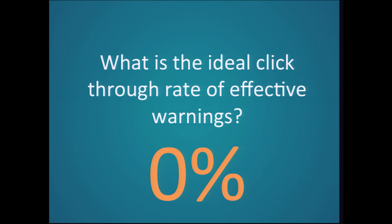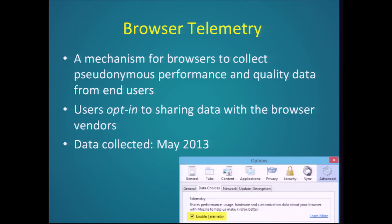What is the ideal click-through rate we want to achieve? A 100% click-through rate makes me sad, so a 0% click-through rate would make me happy. Ideally I'd want to live in a world where click-through rate for warnings is 0%. We measured this using browser telemetry — last year in May 2013, if you were using Chrome or Firefox and agreed to share data with Google or Mozilla, your data was involved in the study. Roughly 25 to 30 million warnings were involved in the numbers I'll be showing you.